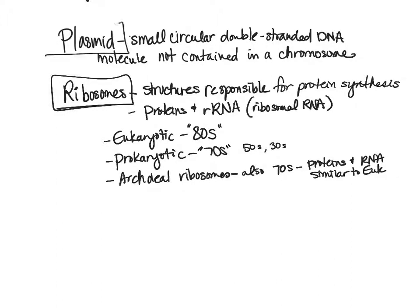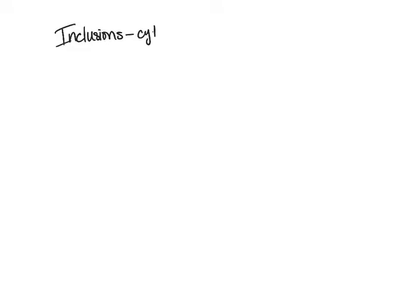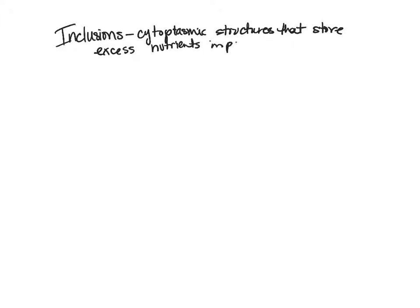Now that we've covered ribosomes, plasmids, and the nucleoid region, the next topic is inclusions. These are very different from eukaryotic organisms, as inclusions are specific to prokaryotic cells. Inclusions are cytoplasmic structures that store excess nutrients in polymer form — the long-chain or more complex form. Bacteria can store nutrients in these membrane-enclosed structures to reduce the buildup of osmotic pressure in the cytoplasm.